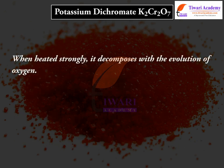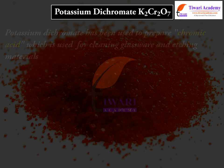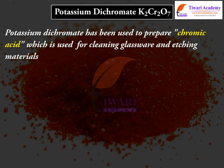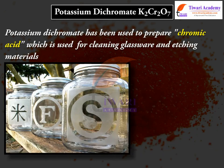When heated strongly, potassium dichromate decomposes with the evolution of oxygen: 4K₂Cr₂O₇ → 4K₂CrO₄ + 2Cr₂O₃ + 3O₂. Potassium dichromate has also been used to prepare chromic acid, which is used for cleaning glassware and etching materials.